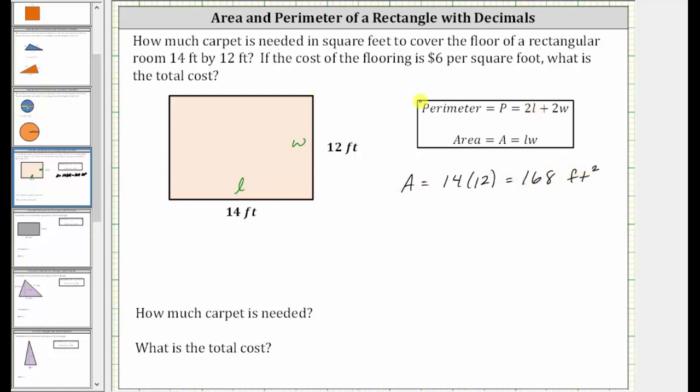But we're also asked to determine the total cost where each square foot costs $6. And since the area is 168 square feet, the total cost C is going to be equal to $6 times 168. Let's go ahead and find this product.